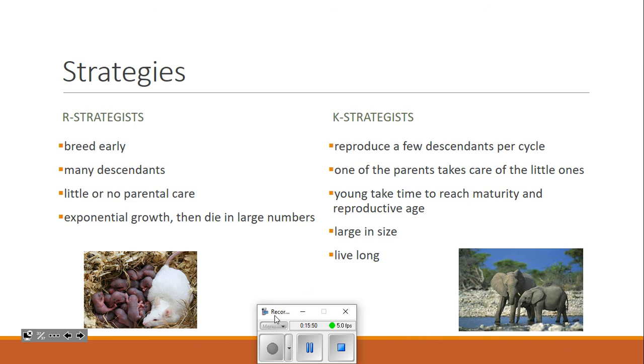Little or no parental care. So the parents will maybe leave or abandon the young after a very short amount of time or not take care of them at all. And then typically, like I said before, they'll have exponential growth in their population, but then die in large numbers as soon as conditions stop being ideal. These are the same type of rats that I worked with in my lab in university. Although when we got them, they already looked white and like a rat, not naked and terrifying like those there. But they are pretty good examples of R-strategists.